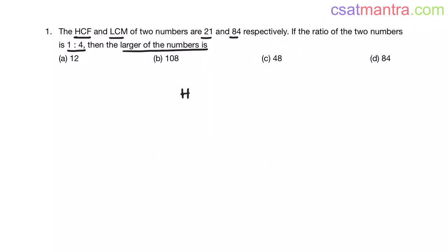We know HCF is less than or equal to the given number is less than or equal to LCM. The number should be greater than HCF and less than LCM. Here HCF is 21, and LCM is 84. Our number should be between 21 and 84 my friends.